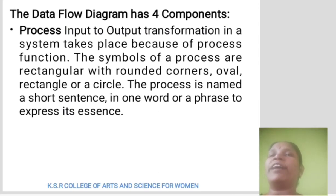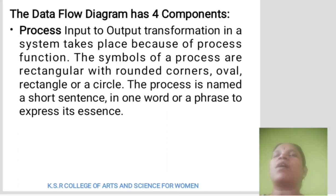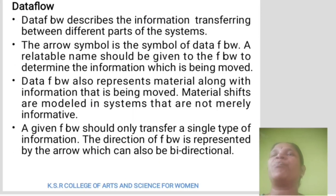The data flow diagram has four components. The first is Process. Input to output transformation in a system takes place because of the process function. The symbols of process are a rectangle with rounded corners, an oval, or a circle.